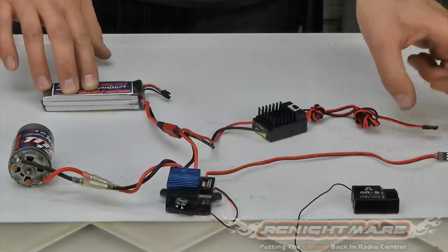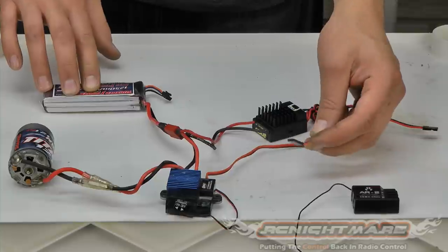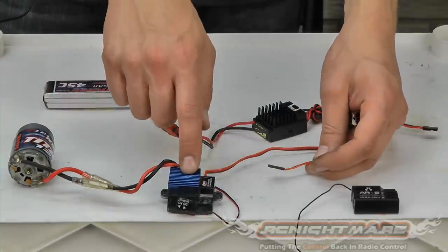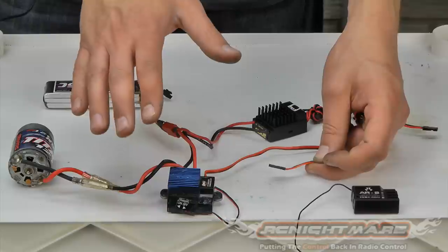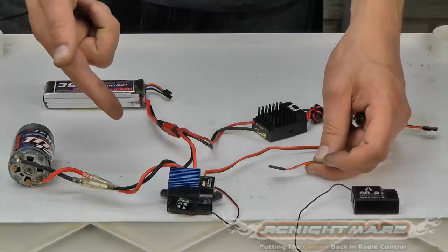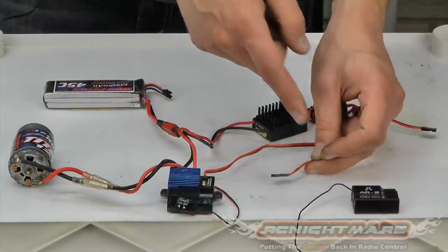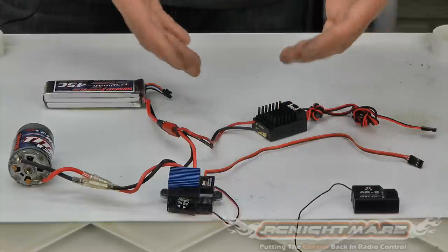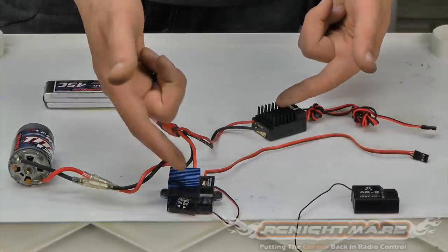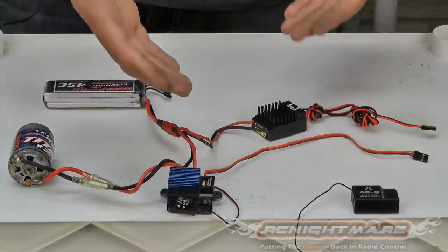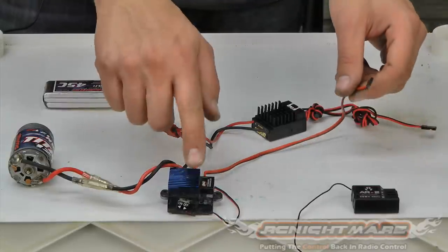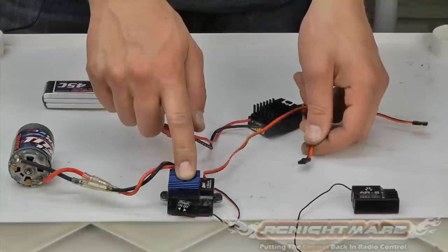Now, before we do that, we have to disconnect the power wires from our speed controller connector. So most speed controllers have a BEC built into them that powers your receiver and your servos. We don't want both of them plugged in at the same time. Otherwise, our castle BEC and our speed controller BEC will be fighting each other. So we need to disconnect the power wires for this BEC from their ESC.